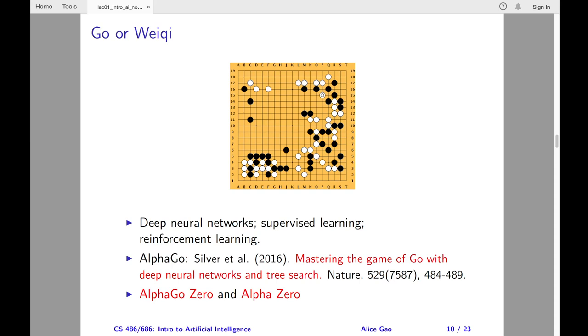The first network is called the policy network, which maps a board position to a probability distribution over actions. AlphaGo uses the policy network to sample actions when simulating a game. The other network is called the value network, which maps a board to a numeric estimate of the game's outcome. AlphaGo uses the value network to predict the game outcome without simulating the game until the end.